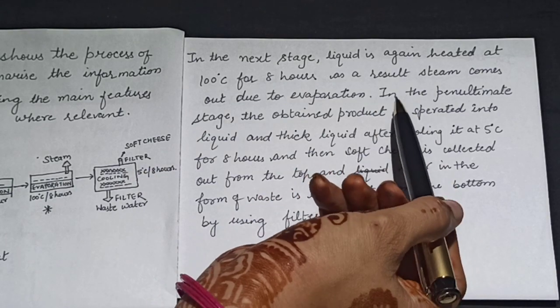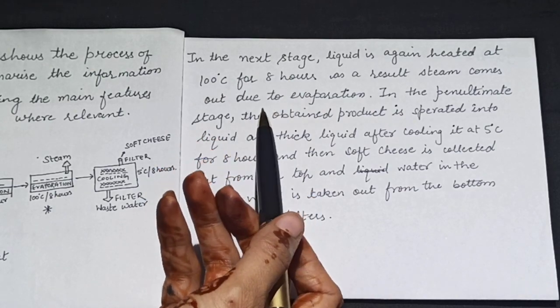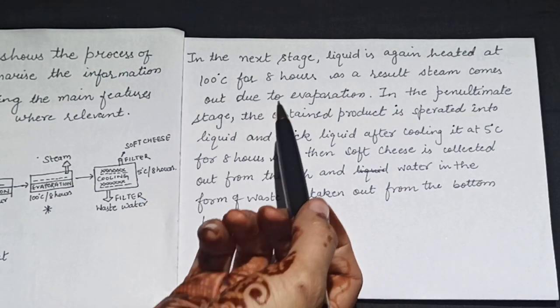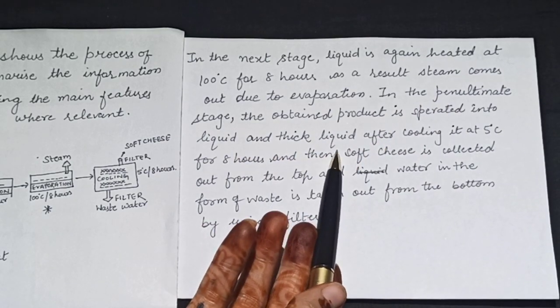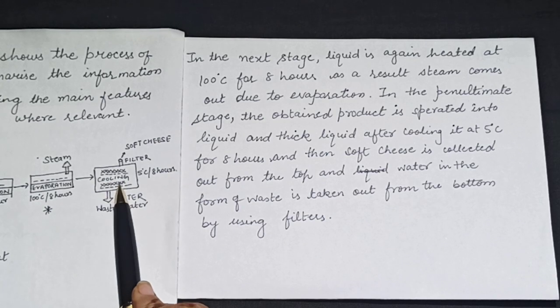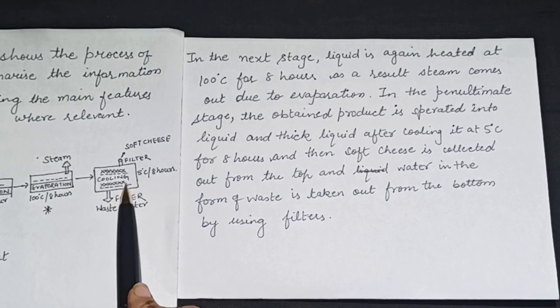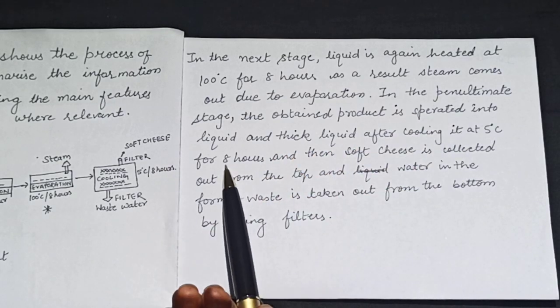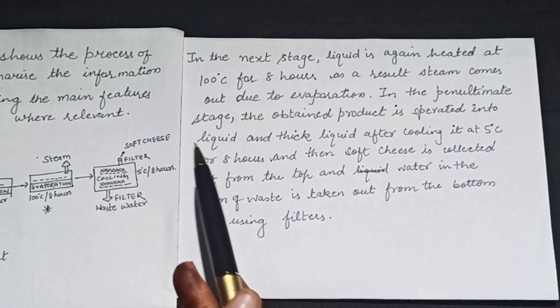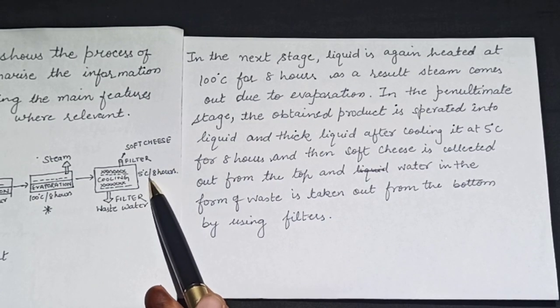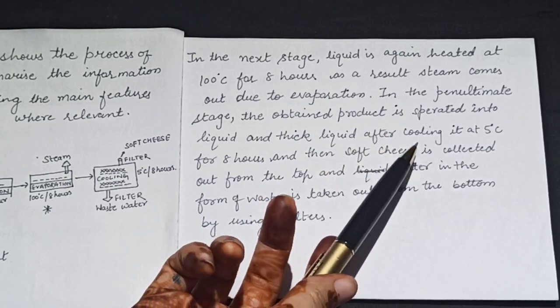In the penultimate stage, penultimate stage means last stage, the obtained product is separated into liquid and thick liquid after cooling it at 5 degrees Celsius for 8 hours and then soft cheese is collected.